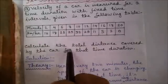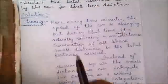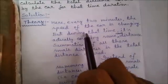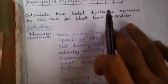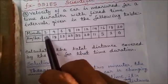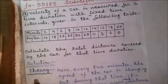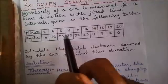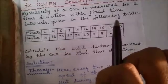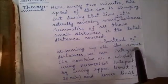Our question is: calculate the total distance covered by the car for that time duration. Our theory here: every two minutes the speed of car is changing, but during that time it's actually covering some distance. Like between these two minutes it's covering some distance in 10 kilometers per hour; between this time it's covering some distance in 18 kilometers per hour. We can basically find out all the smaller distances covered and add them up to get our final answer, but that's a complex and time consuming process.